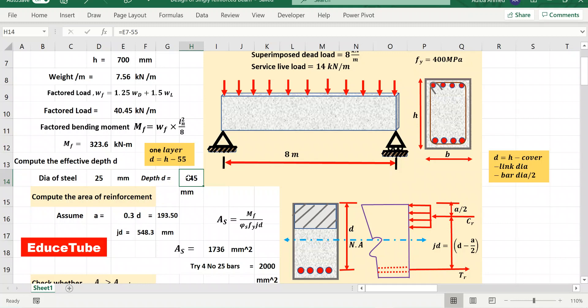Now I need to find jd. How to get jd? d minus a by 2, surely it comes like this. Why I got the jd? Because if we look at this equation, As equal to MF by phi_s fy jd, so surely I need jd.